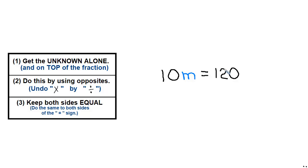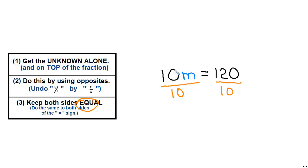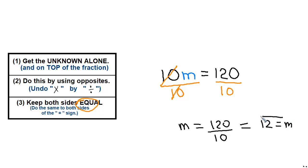Let's try a different problem. Here I have 10m equals 120. Is m alone? Nope — it's next to a 10, so we have to get rid of the 10. This is 10 times m, so the opposite of multiply by 10 is to divide by 10. I put a line here to show I'm dividing by 10. To keep both sides equal, I divide this side by 10 also. 10 over 10 reduces, so rewriting it: m equals 120 divided by 10. That gives me 12. m equals 12.